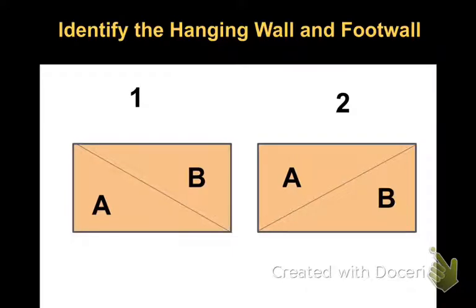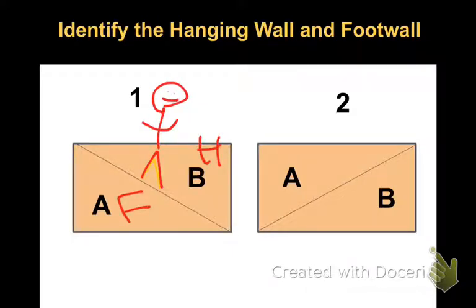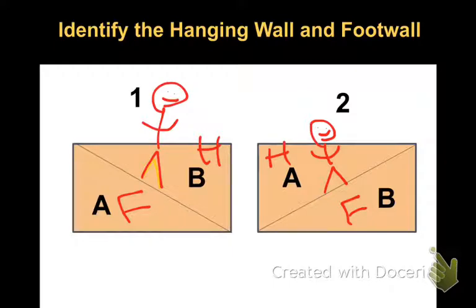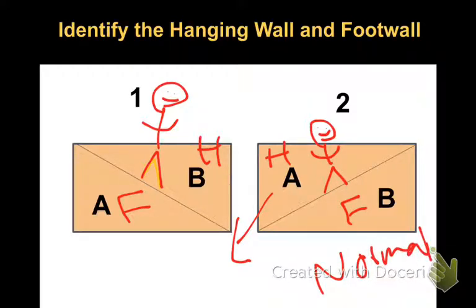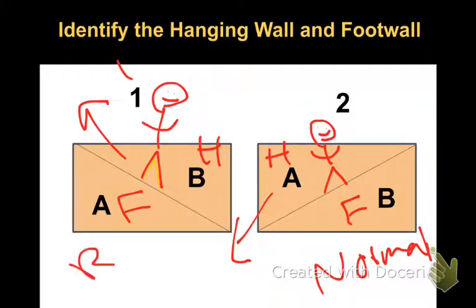Let's look at number one. I'll draw a little man standing on the fault line — his head is in the hanging wall and his feet are in the foot wall. So B is the hanging wall and A is the foot wall. For number two, his head is in the hanging wall and his feet are in the foot wall. If A moved down, the hanging wall moved down — therefore it is a normal fault. If B moved up for number one, going up is reverse, so this would be a reverse fault.